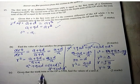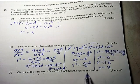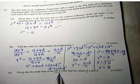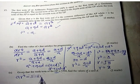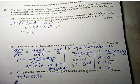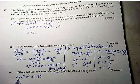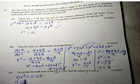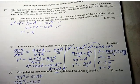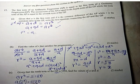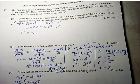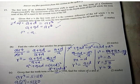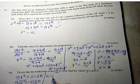Given that the 10th term of the GP is 5120, find the values of A and D. The 10th term of the GP is AR⁹ equals 5120. We know R equals 2, so A times 2⁹ equals 5120. Since 2⁹ equals 512, A equals 5120 divided by 512, giving A equals 10.